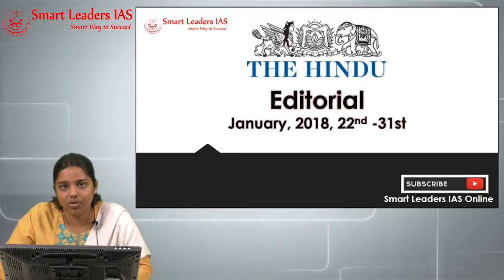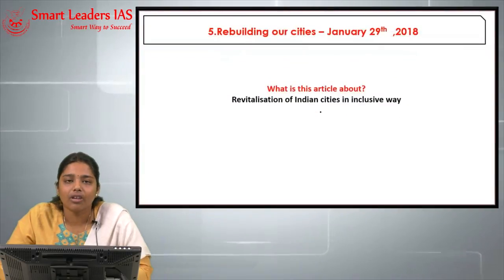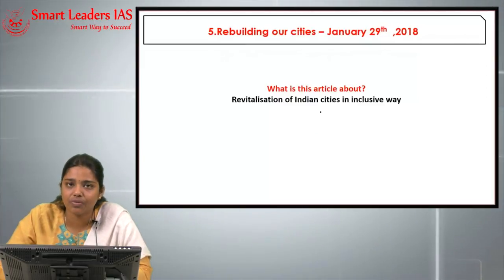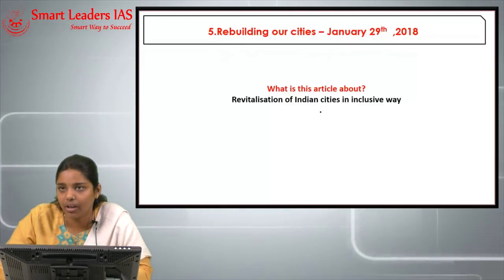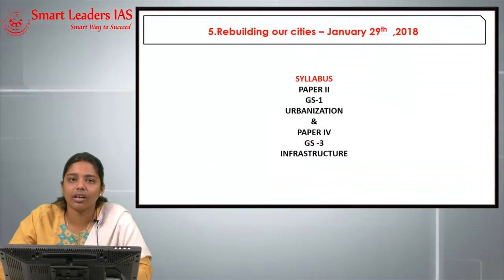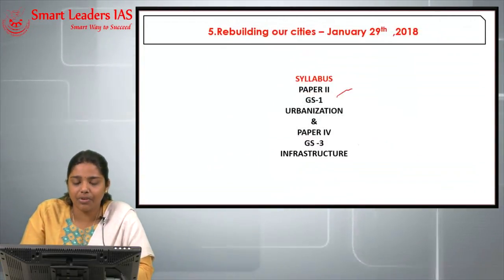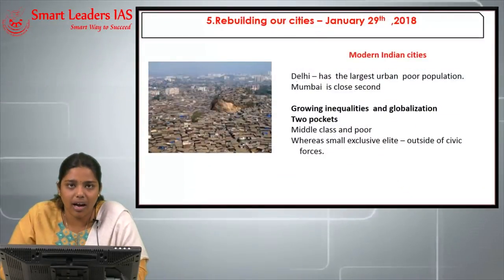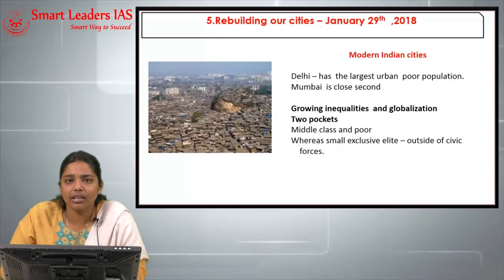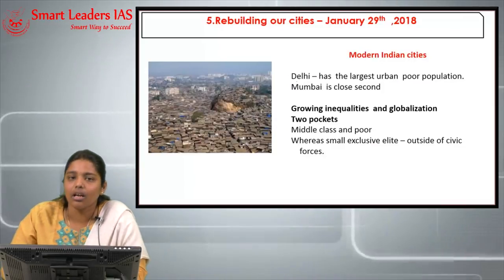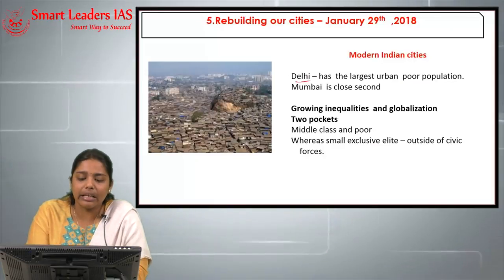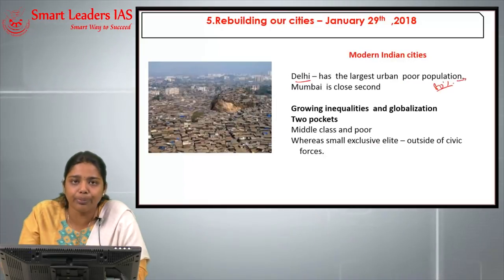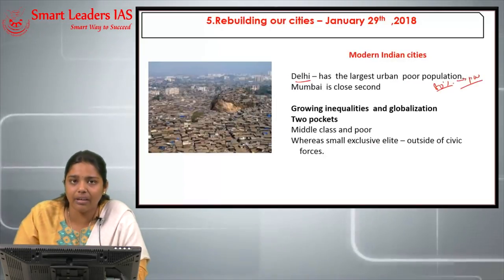The next article, which came on 29th January, is about rebuilding our cities — the revitalization of Indian cities in a more inclusive way. Urbanization is in GS1 and infrastructure is in GS3, so this article is important. The author says the present condition of modern Indian cities is highly pathetic — Delhi has the largest urban poor population, with more than 80% of Delhi's population being poor, which is very high even by global standards. Inequality is highly growing due to the impact of globalization.